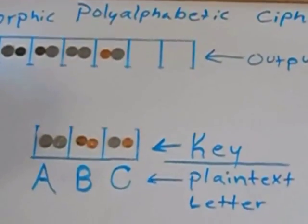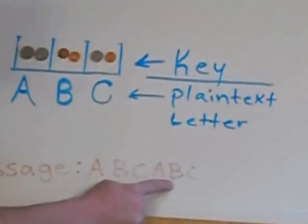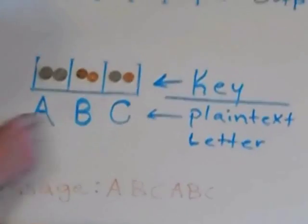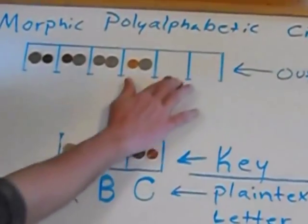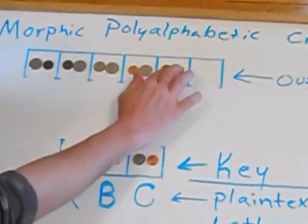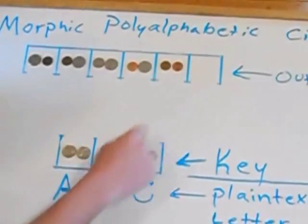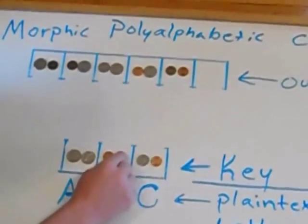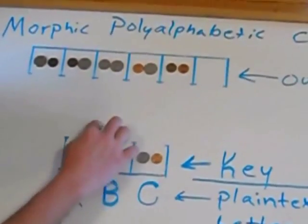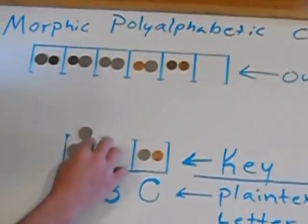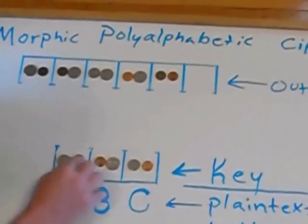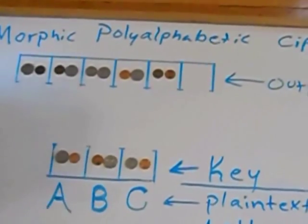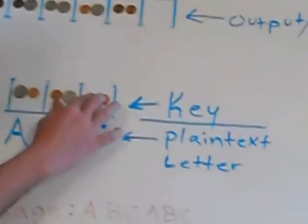And then we go to our next letter B and you see that's two pennies. So we put that up there, select at random again, swap them and then do the seed in which is the nickel or the penny.